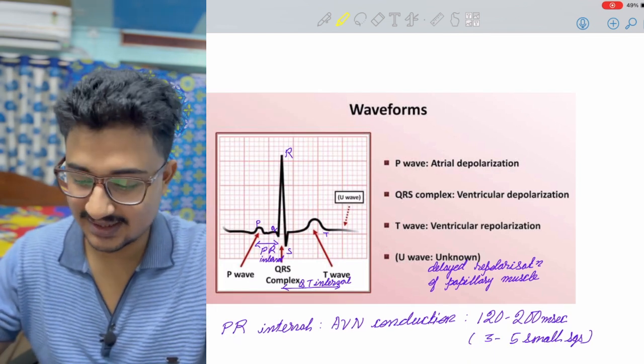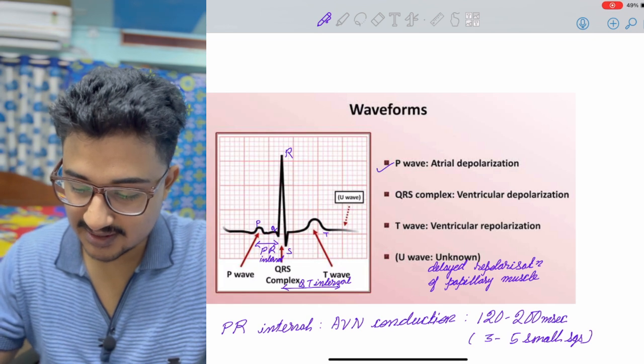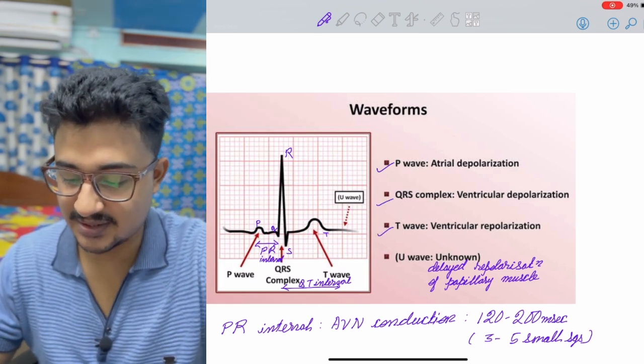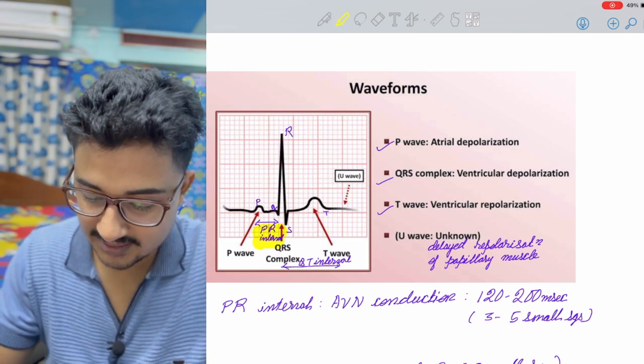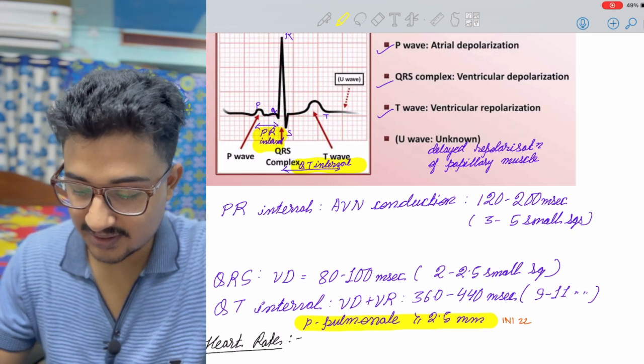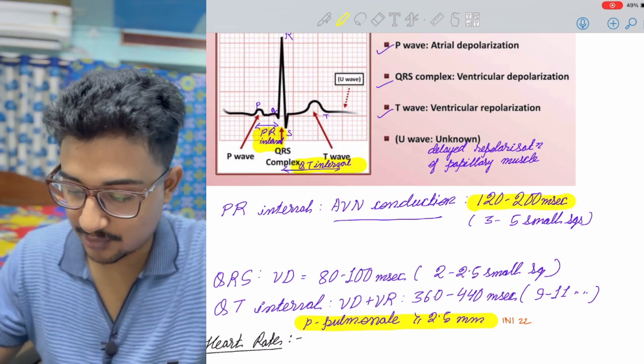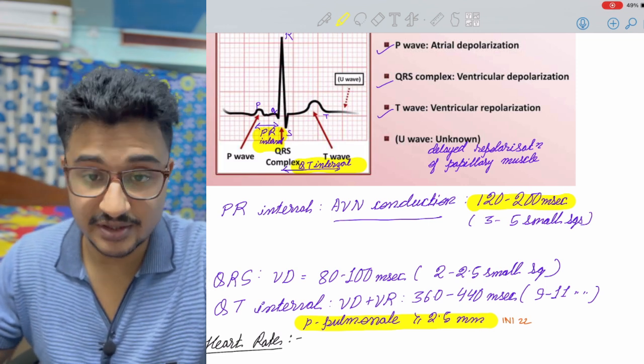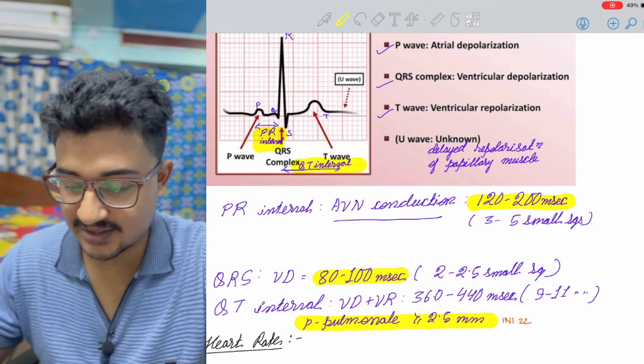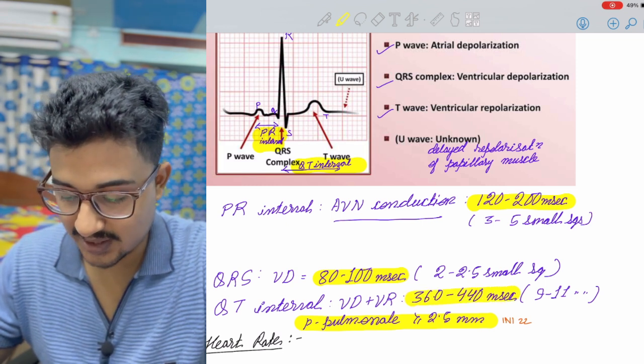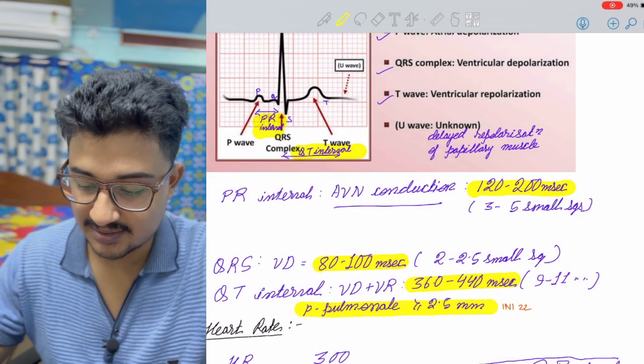Coming to the waveforms of ECG, the first part you all know, it is basically the past 12 what you have read. P-wave is atrial depolarization, QRS is ventricular depolarization, T-wave is ventricular repolarization and U-wave is repolarization of the papillary muscles. Important thing is the PR interval and the QT interval. PR interval is associated with the AV nodal conduction and it is mainly 120 to 200 milliseconds. This is important, the value is important.